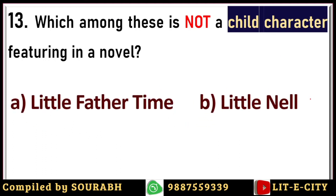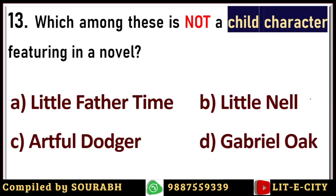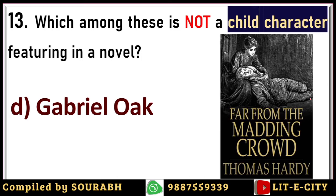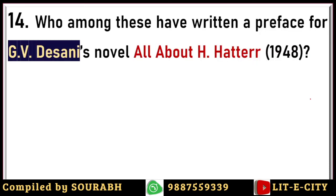Next question: which among these is not a child character featuring in a novel? Options are Little Father Time, Little Nell, the Artful Dodger, and Gabriel Oak. In many Victorian novels, children play a prominent part in the course of action. The correct answer is Gabriel Oak, who is actually the adult protagonist of Far from the Madding Crowd by Thomas Hardy. Little Father Time features in Jude the Obscure; Little Nell is from The Old Curiosity Shop; and the Artful Dodger is from Oliver Twist — all by Dickens.